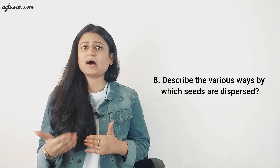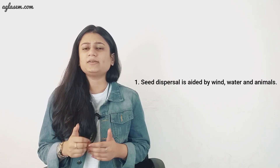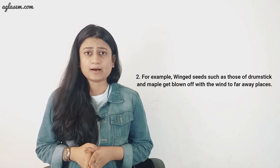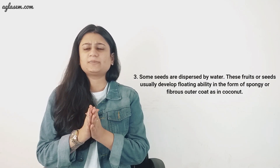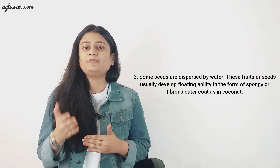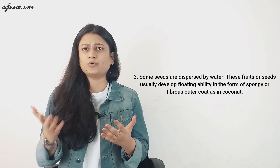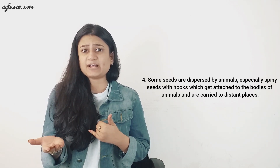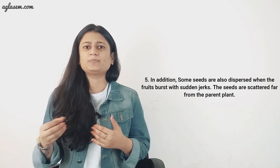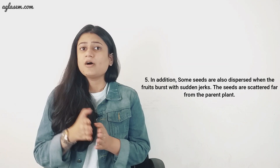Question number 8: describe the various ways by which seeds are dispersed. In nature, the same kind of plants grow at different places because seeds are dispersed to different places. Seed dispersal is aided by wind, water, and animals. Winged seeds such as those of drumstick and maple get blown off with the wind to faraway places. Some seeds are dispersed by water — these fruits or seeds develop floating ability in the form of a spongy or fibrous outer coat, as in coconut. Some seeds are dispersed by animals, especially spiny seeds with hooks which get attached to the bodies of animals and are carried to distant places. In addition, some seeds are also dispersed when fruits burst with a sudden jerk, scattering seeds far from the parent plant.